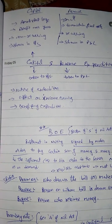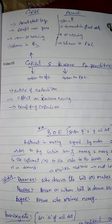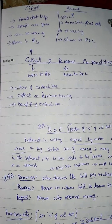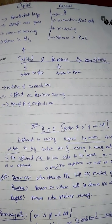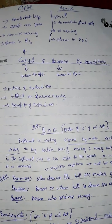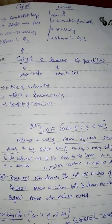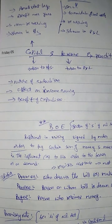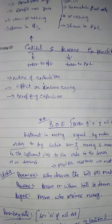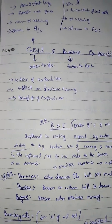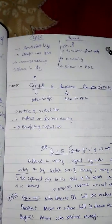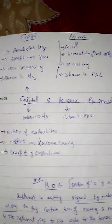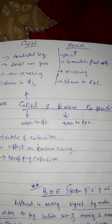The third point to classify expenditure is the benefit period. If you are deriving the benefit for a longer period, it is capital expenditure. If the benefit is for a shorter time, it is revenue expenditure. So these are the three points to classify capital and revenue expenditure.